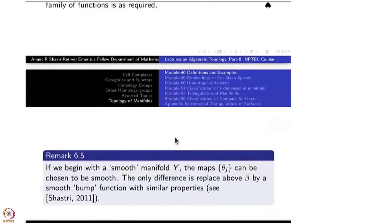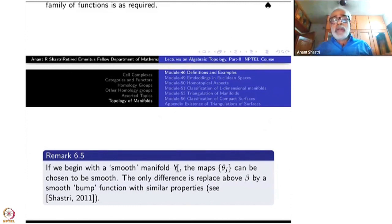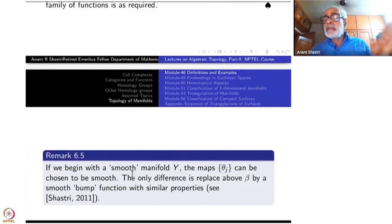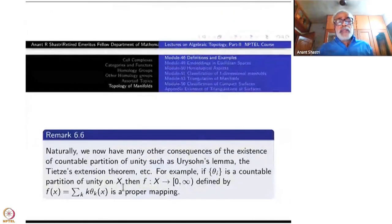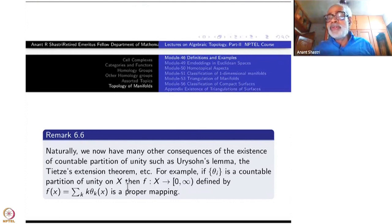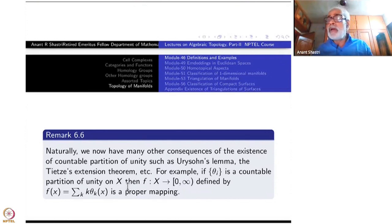If we begin with a smooth manifold Y, the θ_j's can be chosen to be smooth — β can be chosen smooth, and the local homeomorphisms can be chosen smooth — giving smooth partition of unity for smooth manifolds. Naturally there are many other consequences of the existence of partition of unity, such as not having to prove Urysohn's lemma separately for manifolds. You have second countability, local compactness, and together with partition of unity many topological properties follow.